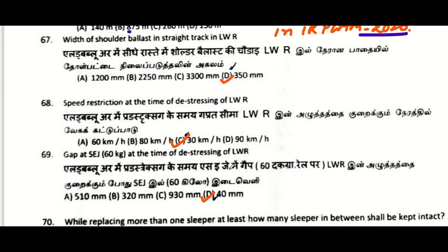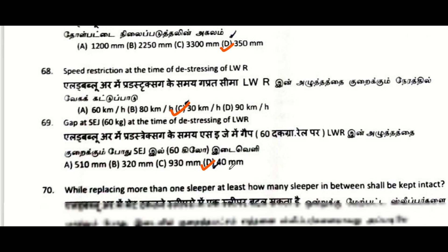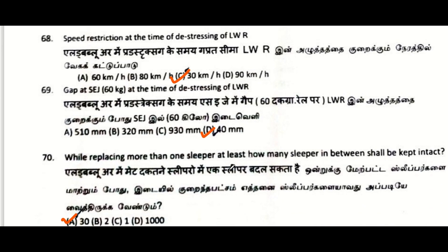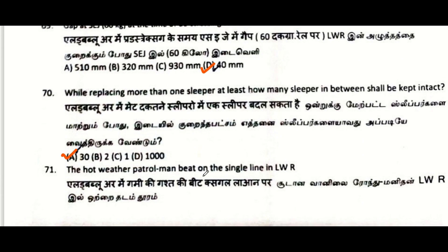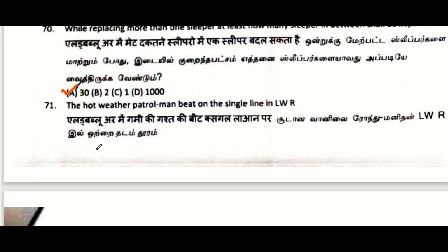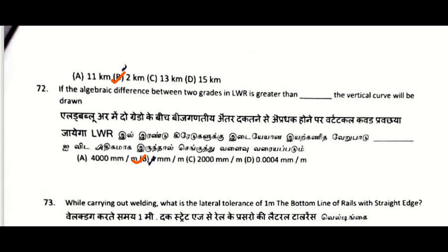Speed restriction at the time of destressing testing of LWR: 30 kmph. Gap at ACJ for 60 kg rail at the time of destressing testing of LWR: 40 mm. While replacing more than one sleeper, at least how many sleepers in between shall be kept intact: 30.